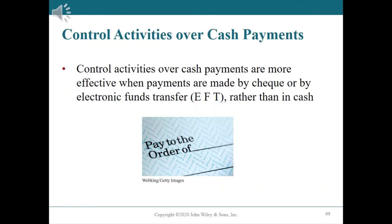Control activities over cash payments. Cash is distributed for a variety of reasons, such as to pay expenses, settle liabilities, or purchase assets. Generally, control activities over cash payments are more effective when payments are made by check or electronic funds transfer rather than in cash. Other control procedures, such as petty cash funds, are put in place for a few payments that cannot be made by check.